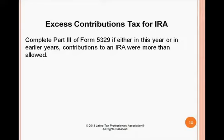There can also be an excess contributions tax for IRAs. You complete Part 3 of Form 5329 if, either this year or in earlier years, contributions to an IRA were more than allowed. Currently the maximum is $5,000 per year, or $6,000 if over age 50. If you contribute more than the allowed amount, you will be penalized with a 6% annual fee for as long as the excess amount remains in the account, so it's best to remove it as soon as possible.